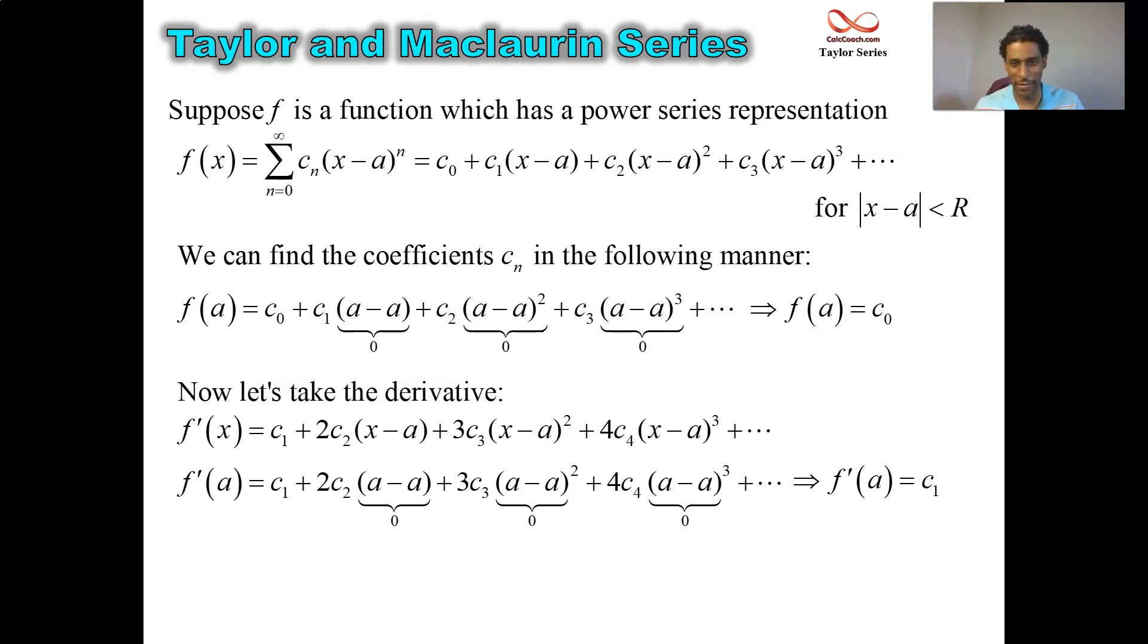If f of a is c sub 0 and f prime of a is c sub 1, make a guess, and you would say f double prime of a should be c sub 2. It's a wrong guess, but that's okay. And so let's look at why.